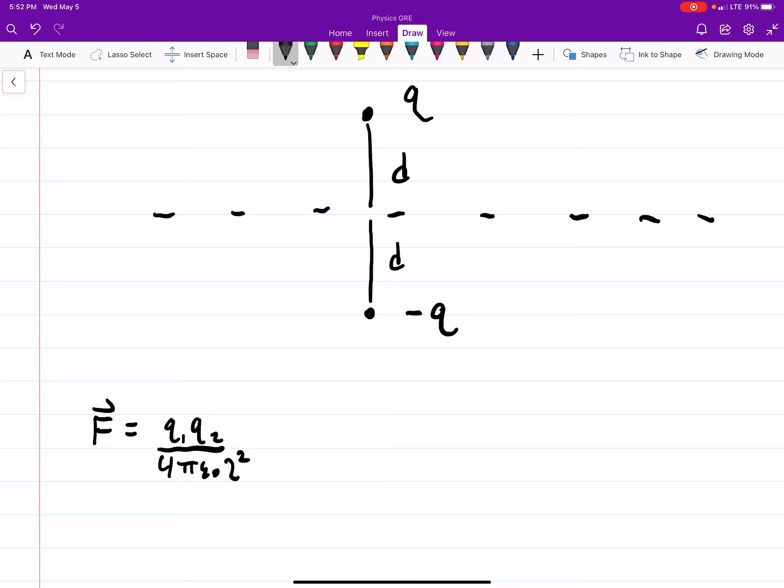So our two charges are a distance 2D away. So this is q times q over 4 pi epsilon naught. Remember, this is the magnitude of the force, so I don't really worry about this negative sign here.